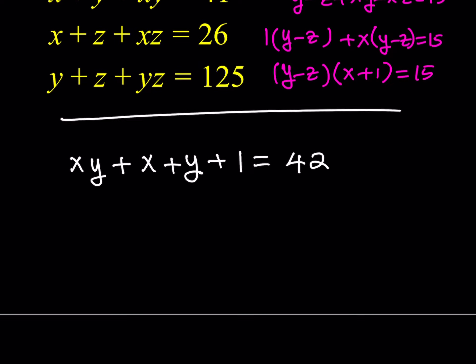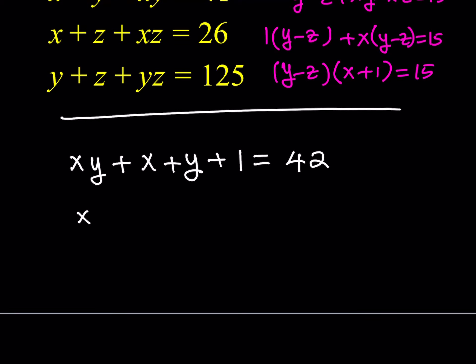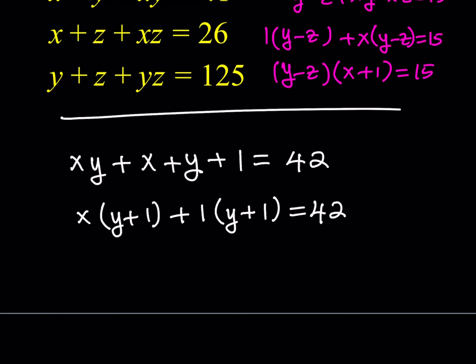When you add one to this equation you make it factorable. Looking at the first two terms you get x times (y plus 1), and then one times (y plus 1). So y plus 1 is a common factor, and this becomes (x plus 1)(y plus 1) equals 42. That's how Simon works — that's how grouping works. It's a simple trick but it's powerful.